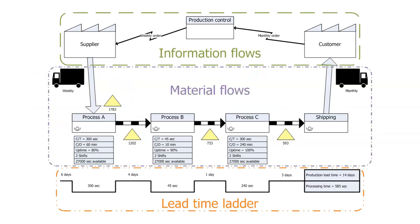Here's an example of what a value stream map can look like. There's a lot of information here. On the top section, you're going to see flows of information — not flows of materials yet, just flows of information.